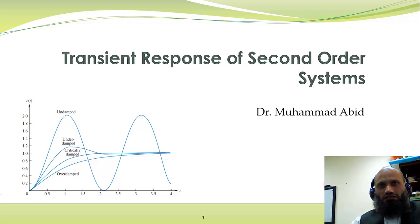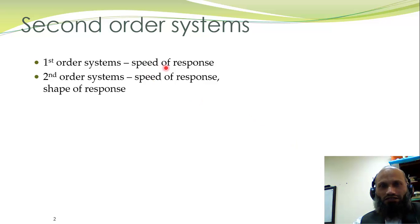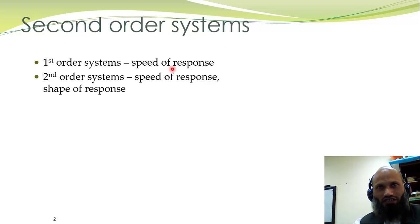In today's lecture we shall talk about the transient response of second order systems. In the last lecture we talked about transient response of first order systems and learned that first order systems always have the same shape of response. The only difference is the speed of response, characterized by a parameter called the time constant. Similar parameters like rise time and settling time were also defined, all giving information about how fast the response is.